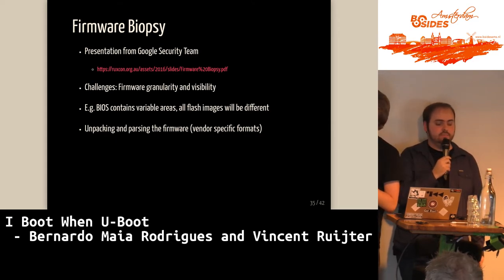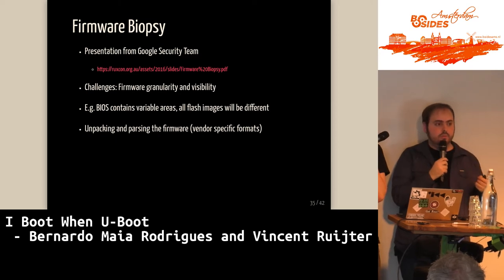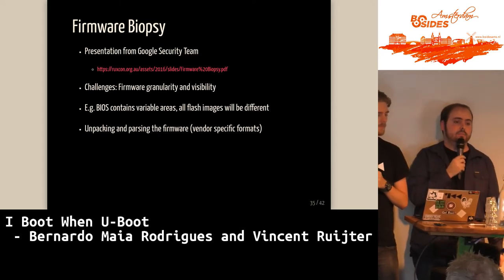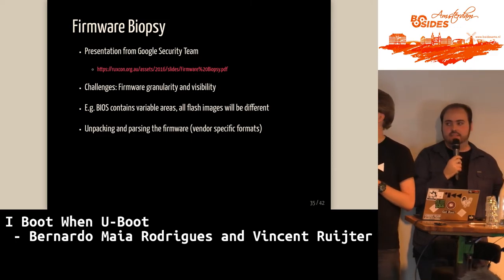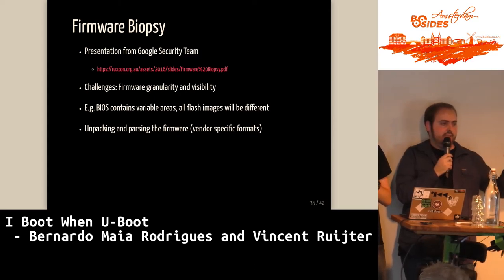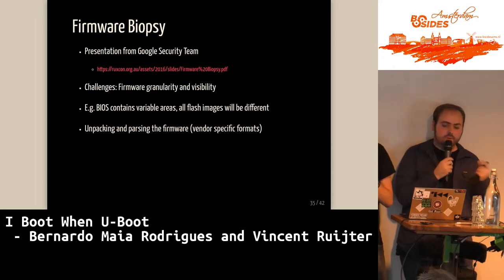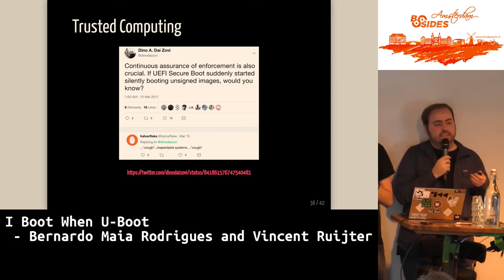There's a presentation from the Google security team — very few companies are good enough to find hardware implants or firmware modifications. Google, I think at Ruxcon in Australia, explained how they're tackling it. They have Google Rapid Response and are integrating Chipsec into their incident response agents. The difficulty is that you have a code area and a variable area — just comparing hashes won't match. You need to parse and unpack for every different vendor. Trusted computing is very important. As Dino said: if UEFI secure boot suddenly started booting unsigned images, how many companies would find that? Inspectable systems are what we need.